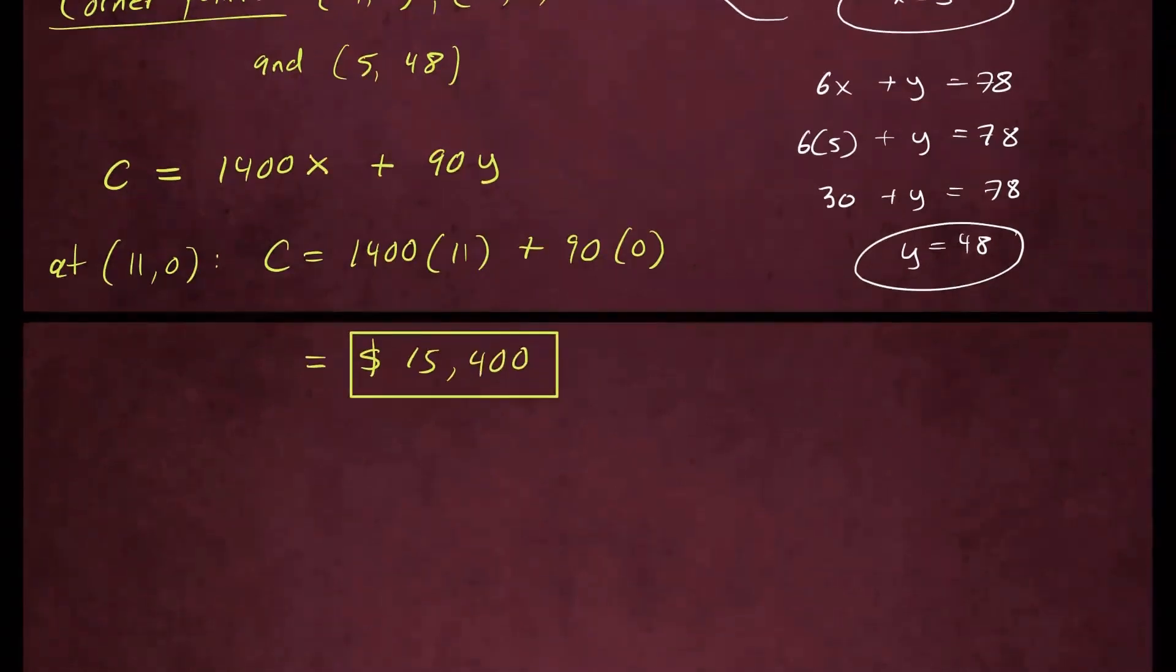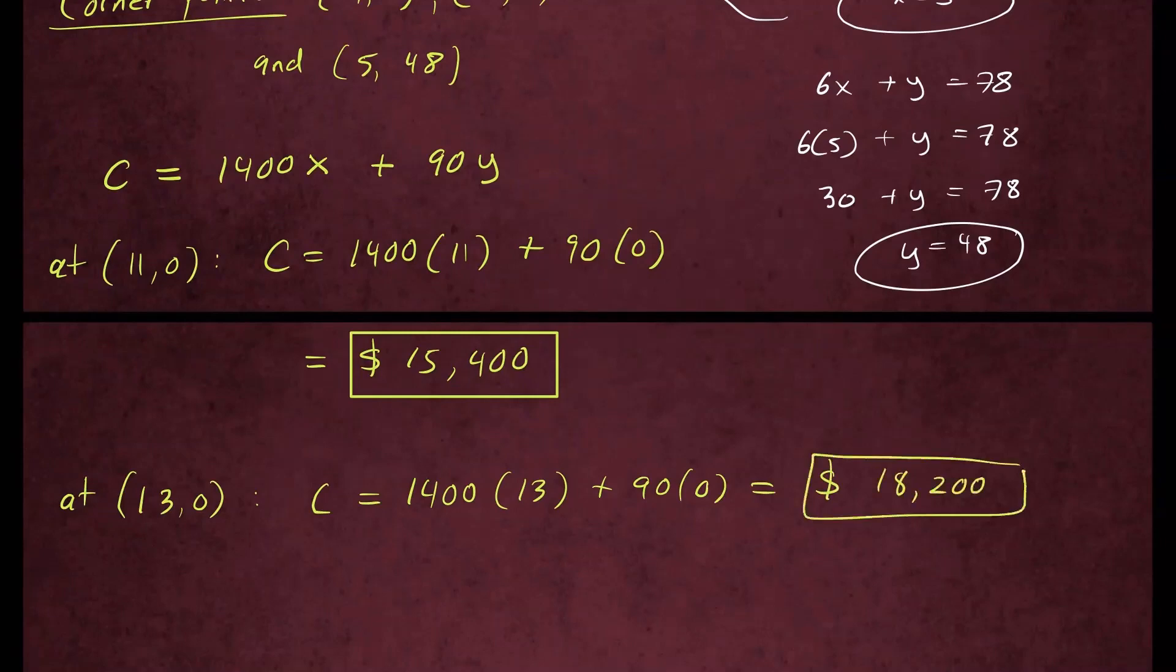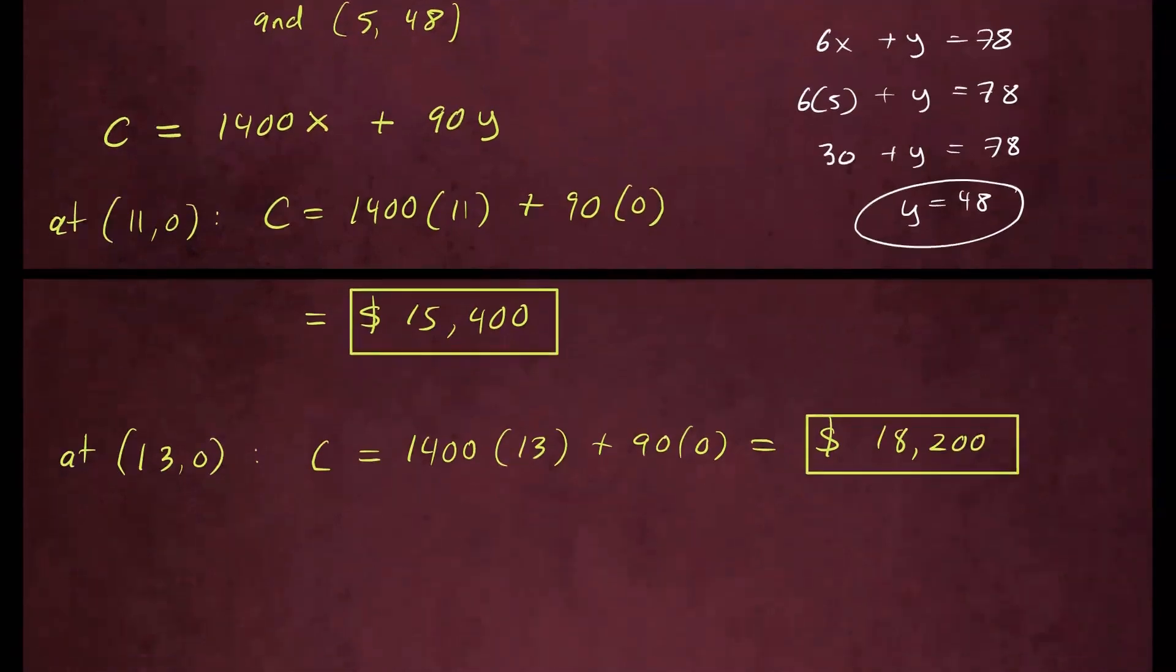And let's check the next one. What if you have (13, 0)? So plug this in for x and y in the cost function. So 1,400 times 13 plus 90 times 0. So that's going to give us about $18,200. So that's the cost. One more to go since we have one more corner point.